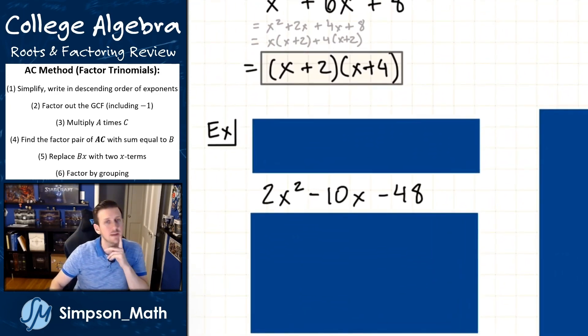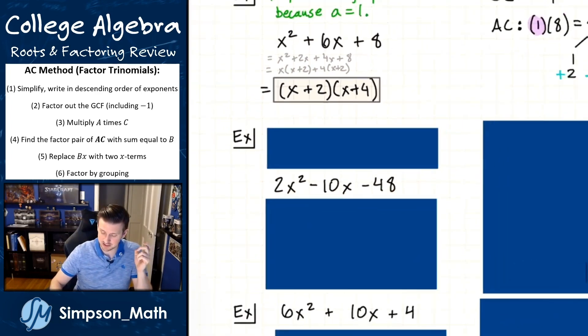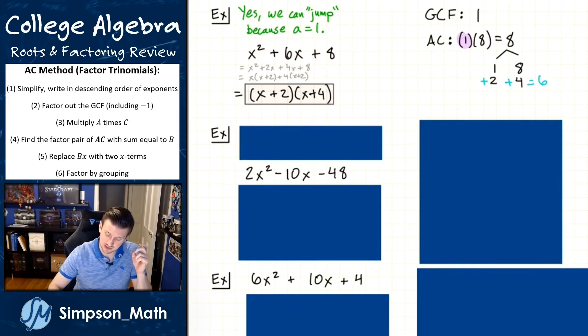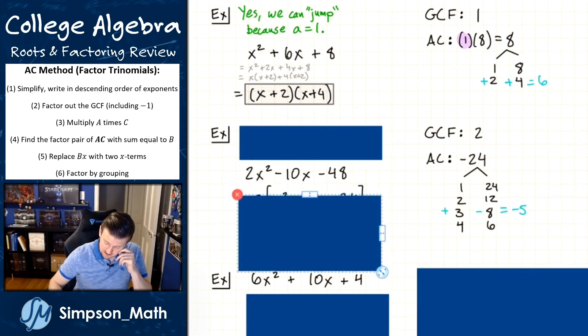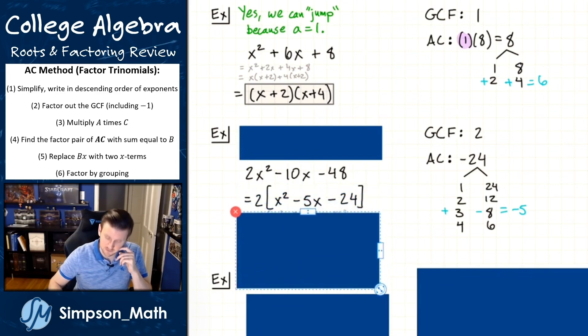So look at this one. Are we able to jump? When you first look at it, you go, nope, that's a two. Mr. Leach, that's not a one. But let's check our GCF. So what's the GCF of that? The GCF of that is two. And so after I pull out that two, what am I left with?